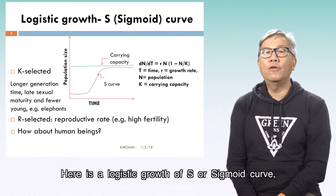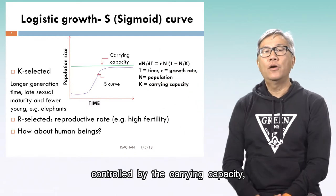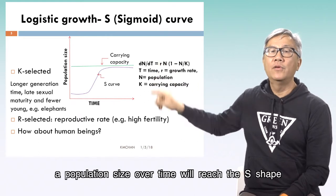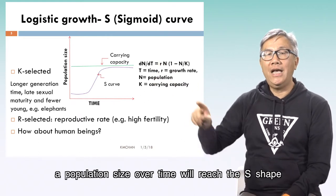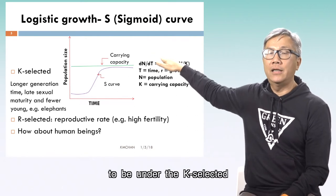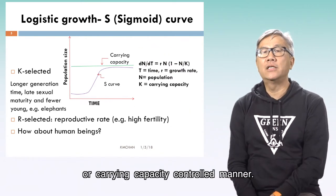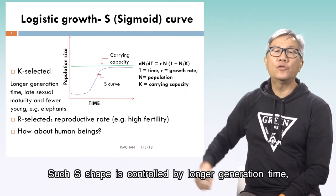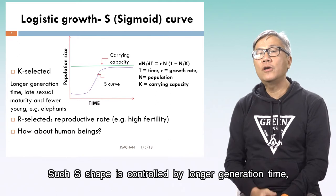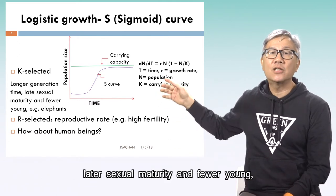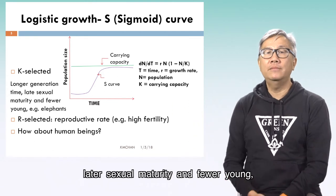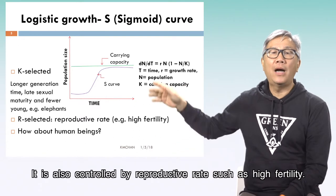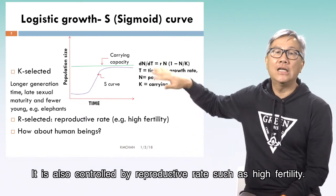Here is a logistic growth, or S-shaped sigmoid curve, controlled by the carrying capacity. Population size over time will reach the S-shape under the K-selected, or carrying-capacity-controlled, manner. Such S-shape is controlled by longer generation time, later sexual maturity, and fewer young, such as in elephants.